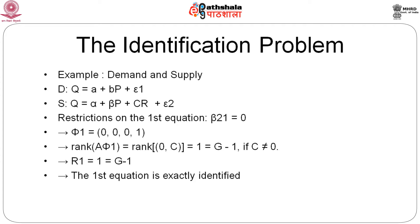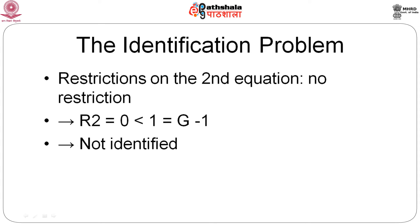Consider a demand-supply model where demand is a function of price and supply is a function of rainfall and price, with the restriction β21 equals 0. The Φ1 matrix turns out to be [0 0; 0 0; 0 1], and rank of A·Φ1 equals rank of [0 c], which equals 1 — equal to g minus 1 if c is not zero. So the rank condition is satisfied and the first equation is exactly identified. For the second equation, r2 equals 0 which is less than g minus 1, so the second equation is not identified.